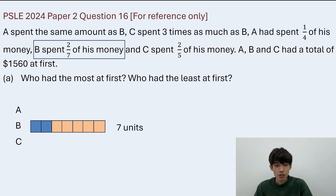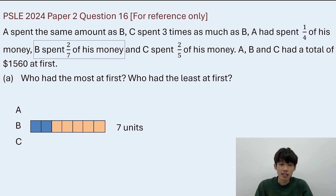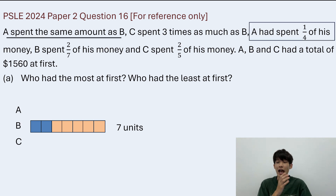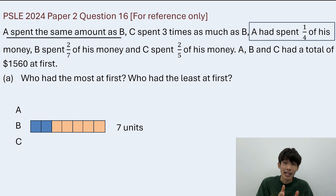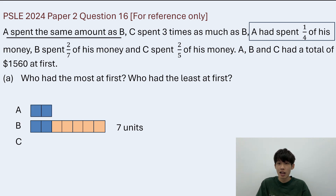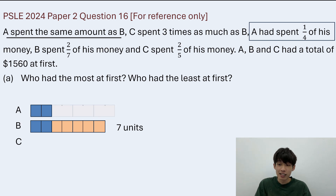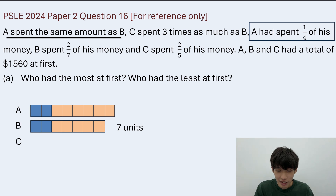Now let's look at A. A spent the same amount as B, and A had spent 1 over 4 of his money. The blue part represents the same amount spent — so also 2 units spent for A. And another 3 sets of those alike, giving a total of 8 units. So 8 units for A.